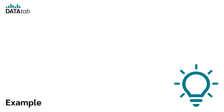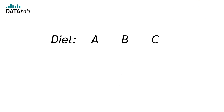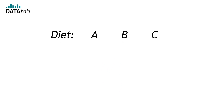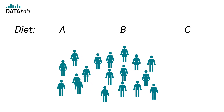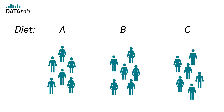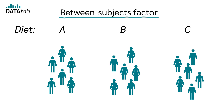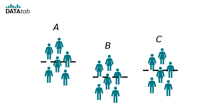Let's look at this using an ANOVA as an example. Let's say we want to test whether different diets have an effect on cholesterol levels, comparing three diets A, B, and C. The factor diet has the three levels A, B, and C. We conduct a study with 18 participants, randomly assigning six participants to each of the three groups. Each participant is assigned to only one group, so we have a between-subjects factor. Our objective is to determine whether significant differences exist in the mean cholesterol levels among the groups, and this is exactly what a one-way ANOVA does.